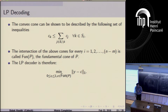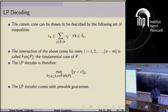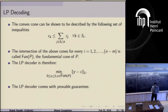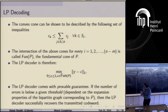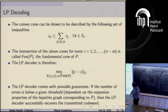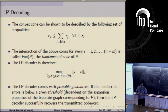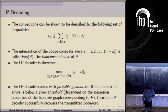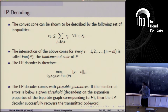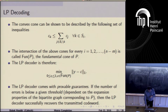What's really powerful about this relaxation is that it comes with provable guarantees. One can prove that if the number of bit-flip errors in Y is below a threshold — depending on expansion properties of the bipartite graph corresponding to P — then the LP decoder recovers the true codeword c. Furthermore, popular methods like message passing and sum-product can be viewed as approximations to this LP, so LP decoding actually works better than message passing.